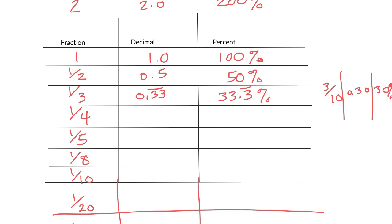1 fourth is 0.25, that's 25% if I multiply by 100. 1 fifth is 0.20, or 20%.